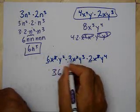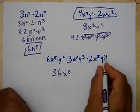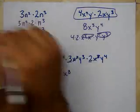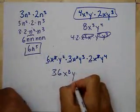Then counting the y's — y, y, y, y, y, y, y, y, y — I get 9 y's, so y to the 9th.